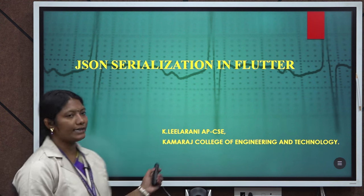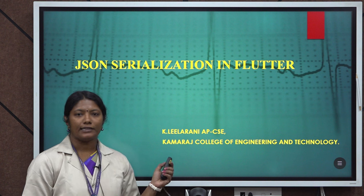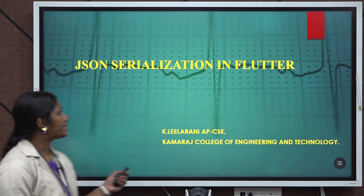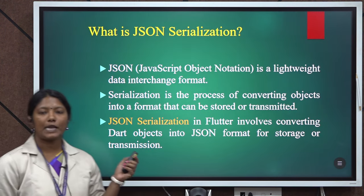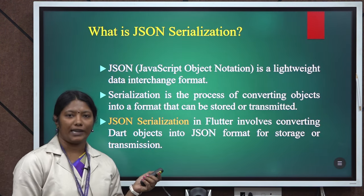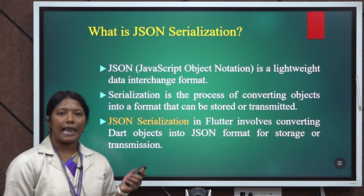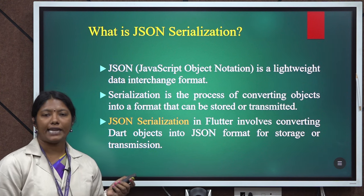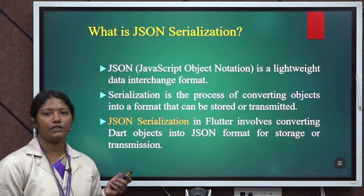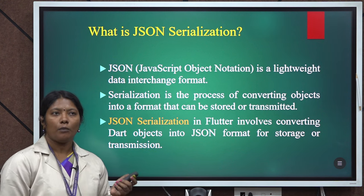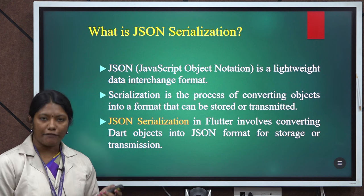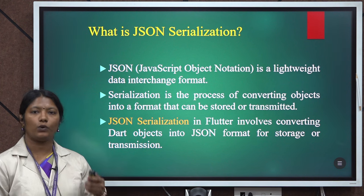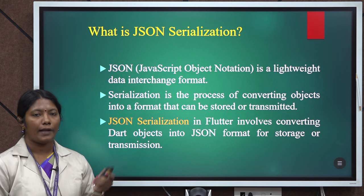First of all, what is JSON? JSON stands for JavaScript Object Notation. It is a lightweight data interchange format. Most often it is used when data is sent from a server to a web page.